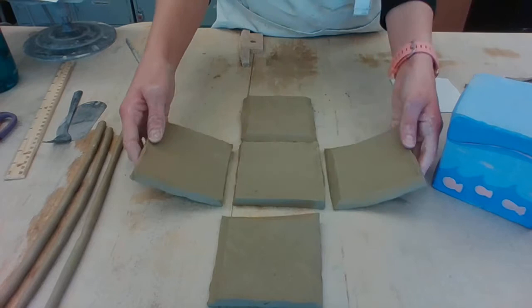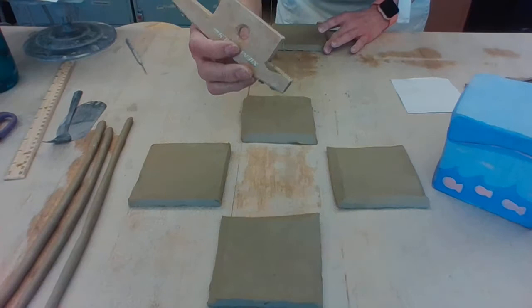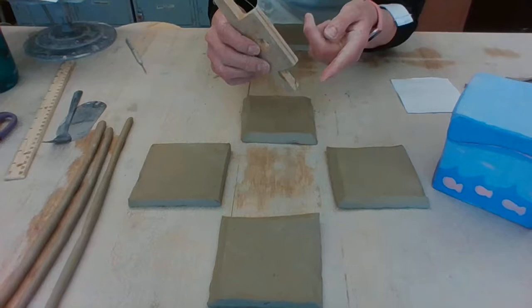So we're going to bring this one to the edge of the table and we're going to use our special tool. This is called a bevel cutter. There's two sides, different angles. We're going to use this side, 45-degree angle.